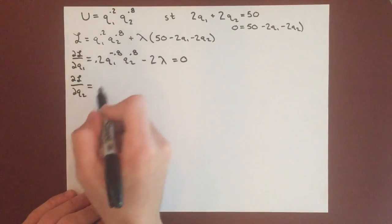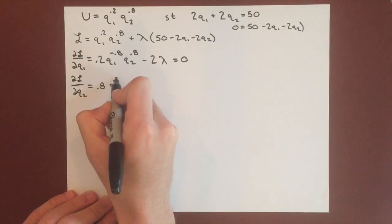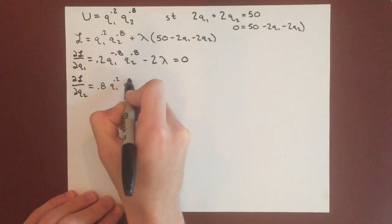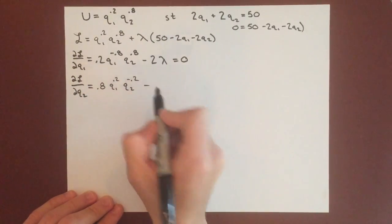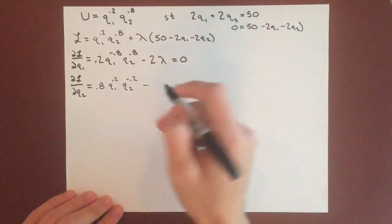And then we can take partial derivative for q2, and we get 0.8 times q1 to the 0.2, q2 to the negative 0.2. And you can see we're going to get the same deal here, it's negative 2 times lambda.